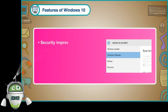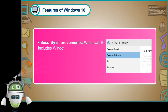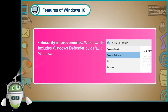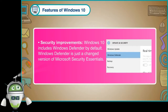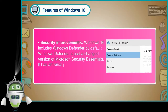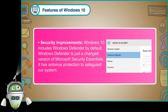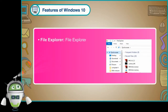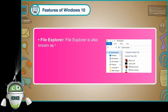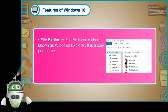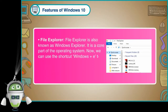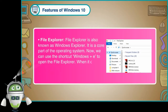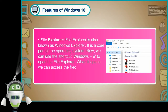Security improvements: Windows 10 includes Windows Defender by default. Windows Defender is just a changed version of Microsoft Security Essentials. It has antivirus protection to safeguard our system. File Explorer is also known as Windows Explorer. It is a core part of the operating system. We can use the shortcut Windows + E to open the File Explorer. When it opens, we can access the frequently used folders and recently used files.